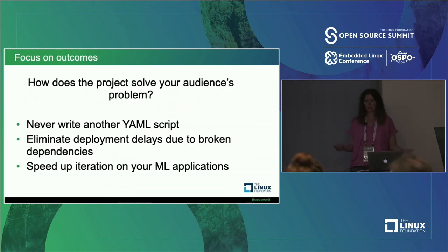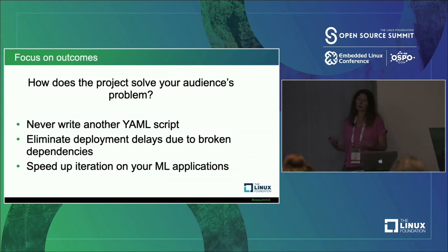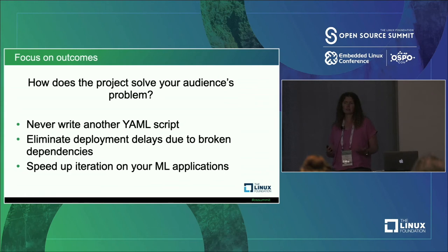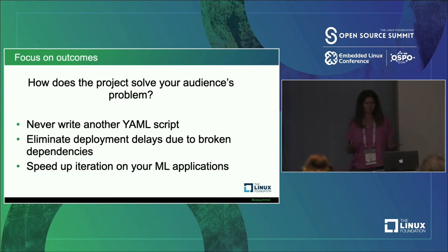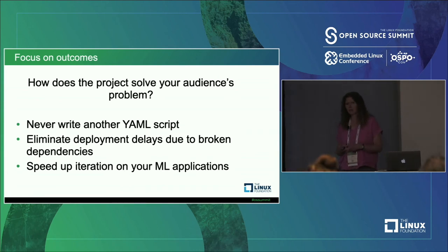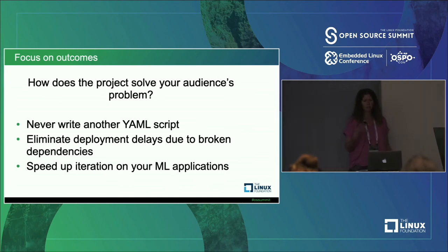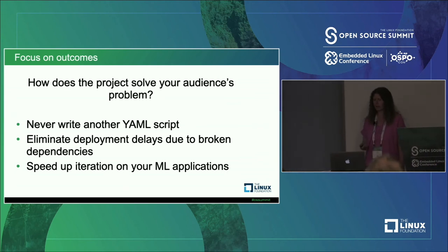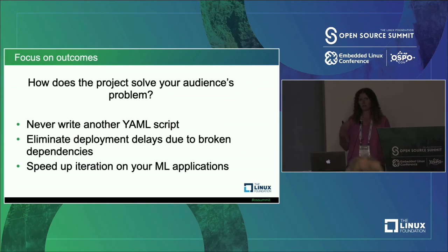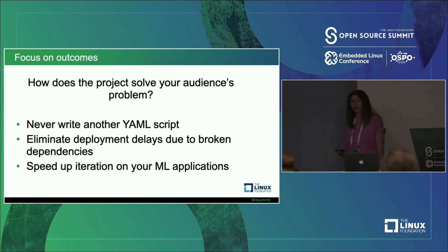Speaking of outcomes — you want to focus on outcomes and be clear about them. We are talking about open source projects, and eventually people will care how you accomplish these outcomes. But at the moment somebody lands on your website, they don't care about the how — they care about the what. They want to know what you do, because if you don't do what they want, they're just going to go somewhere else. Here are some outcome-based examples: 'never write another YAML script,' 'eliminate deployment delays from broken dependencies,' 'speed up iteration on your ML applications.'